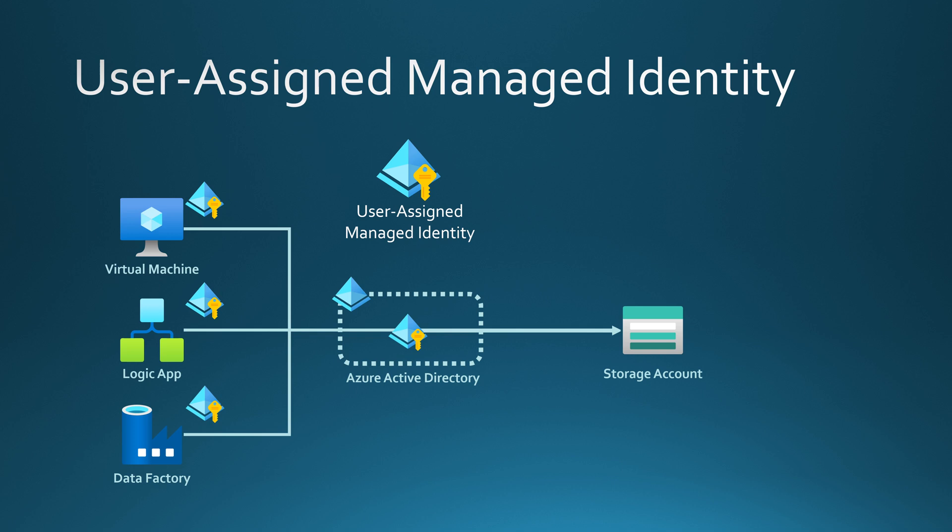The most major difference between user assigned and system assigned managed identity is that user assigned managed identity can be granted to multiple resources, and it is decoupled from the resources it is granted to. Meaning that if we delete all of the resources it has been granted to, the user assigned managed identity would still stay in Azure AD — we would have to destroy the actual user managed identity object in our resource group. Now let's go to the Azure portal and see how it works.